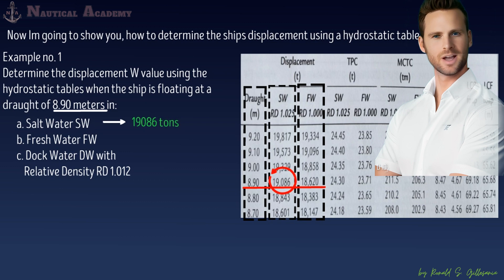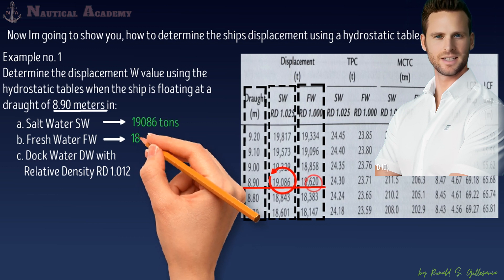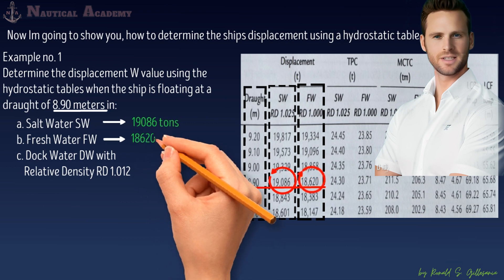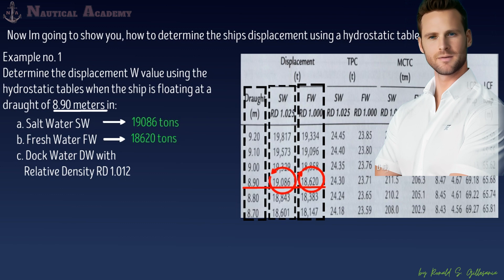And the answer for letter B — the ship's displacement when floating in freshwater at a draft of 8.90 meters — is 18,620 tons.